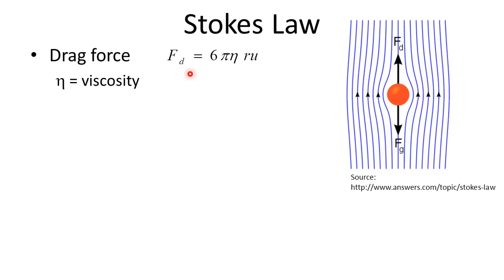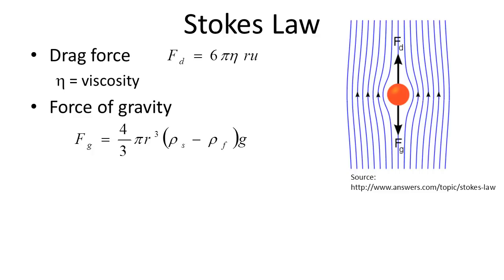Stokes law tells us that the drag force is equal to six times pi times eta — which is the viscosity of the fluid — times r, the radius of the particle, and times u, the terminal velocity. That's the velocity the particle reaches when it's no longer accelerating through the fluid. The force of gravity we calculate using the volume of a sphere multiplied by the difference in density between the particle (rho_s) and the fluid (rho_f), accounting for both the particle weight and the buoyant force, times g, the acceleration due to gravity.